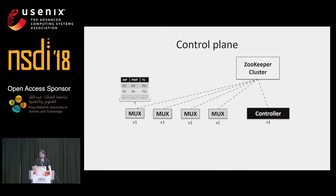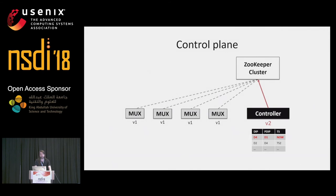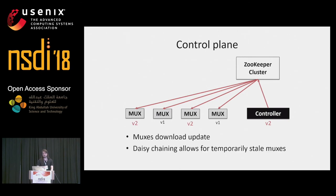All muxes and the controller have the same view of the data plane. When the system administrator wishes to add machines to the server pool, the controller writes the update to ZooKeeper. ZooKeeper then sends notifications to all muxes telling them a new version is available. The muxes download the new version — some faster than others — but that is not a problem, since daisy chaining allows muxes to have transient periods of staleness.